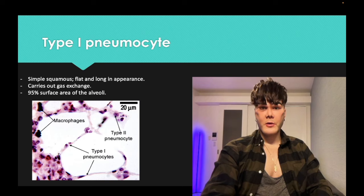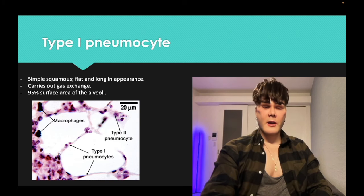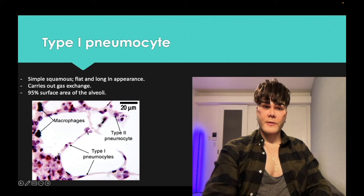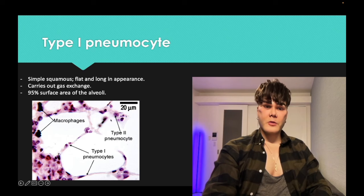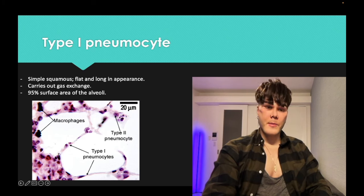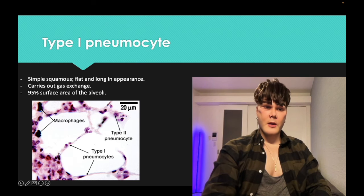We're just going to run through some high-yield cells. Type 1 pneumocytes are the long, simple squamous cells that make up most of the surface area of the lung and are responsible for gas exchange. Type 2 pneumocytes are more interspersed — not lengthy and thin. The dark-staining basophilic cells tend to be the macrophages.